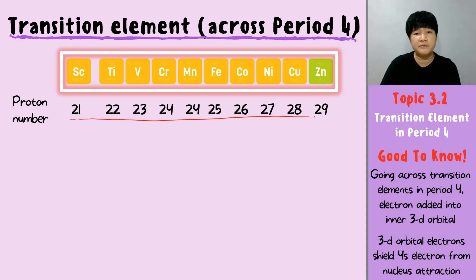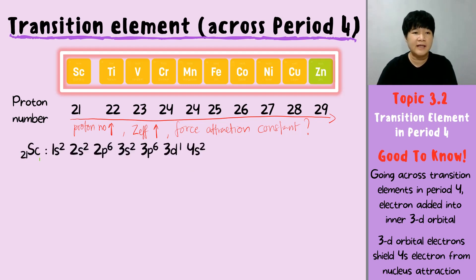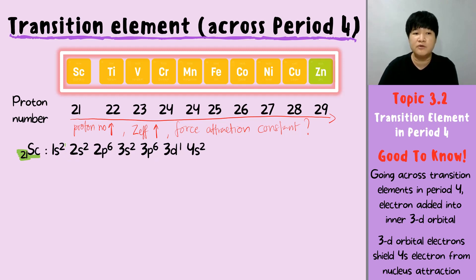As we all agree, moving from left to right in the periodic table, your proton number increases and the effective nuclear charge increases, but the force of attraction will be relatively constant. To understand why, let's look at the electronic configuration of scandium. Scandium has 21 protons, so a neutral scandium will have 21 electrons: 1s2, 2s2, 2p6, 3s2, 3p6, 4s2, 3d1. After 3p, we fill in 4s and then only fill in 3d.